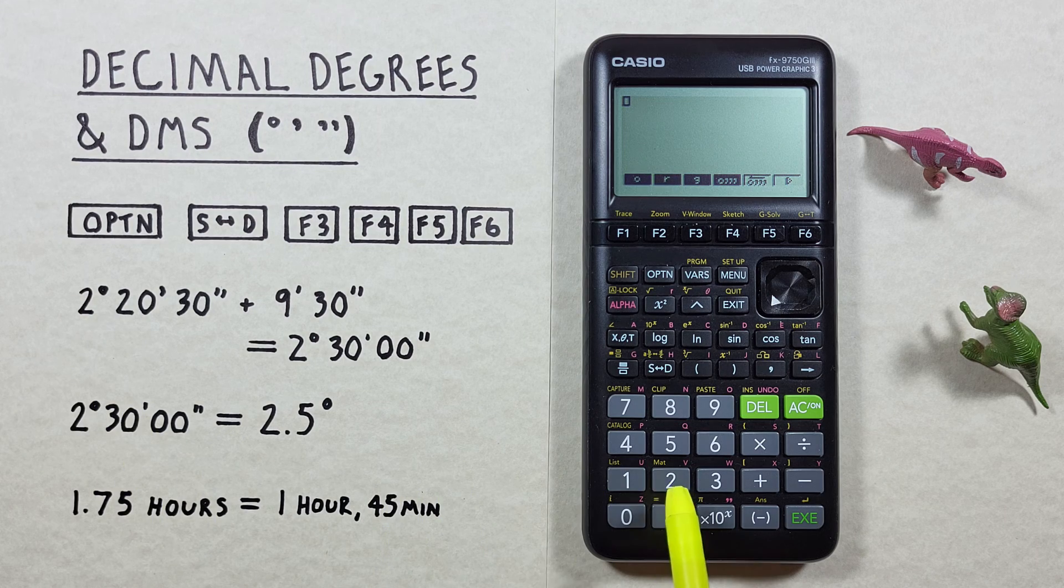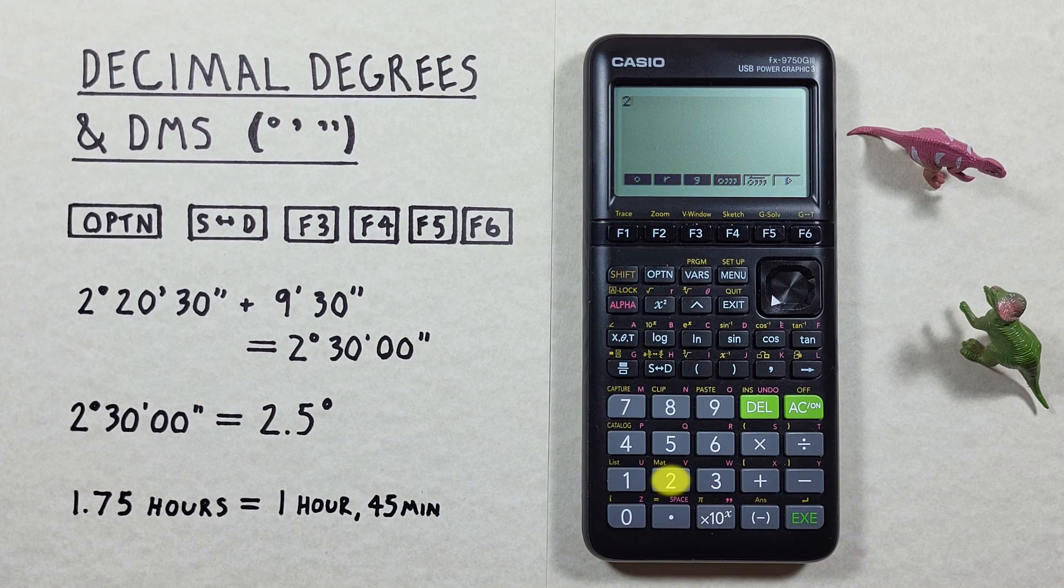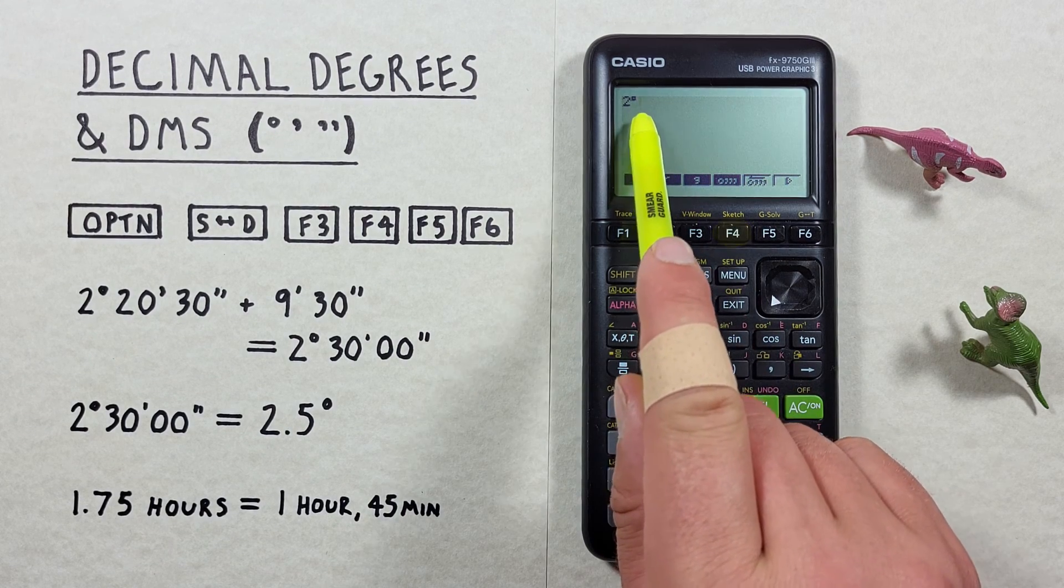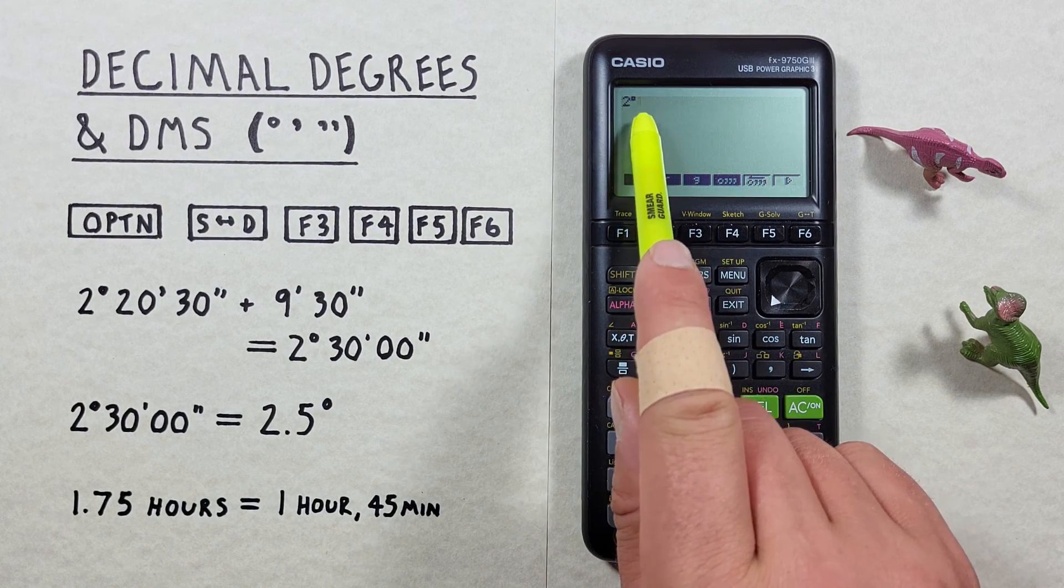We'll enter our two degrees and then we hit the F4 and we see a degree symbol appear beside our two. So that's telling our calculator that's two degrees.